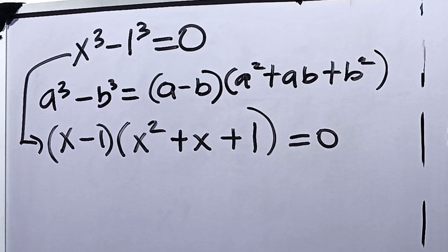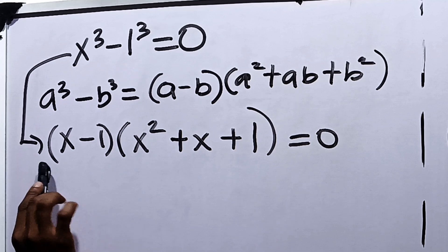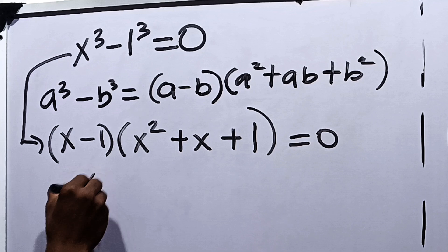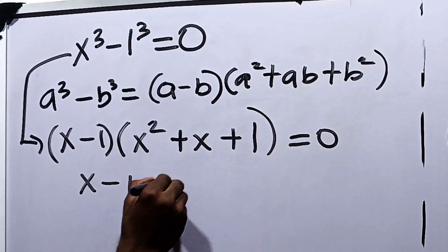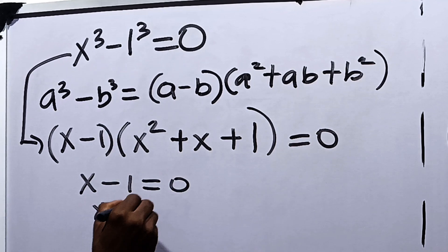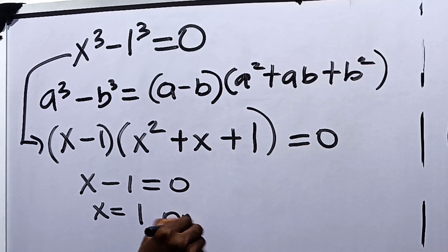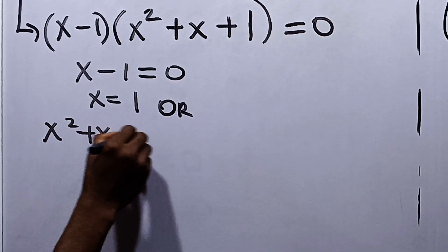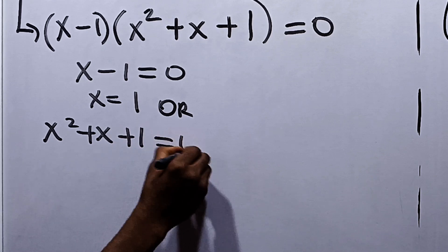Again, we now have the condition where the product equals 0. So it's either that x minus 1 is equal to 0, which implies that x is equal to 1, or x squared plus x plus 1 is equal to 0.